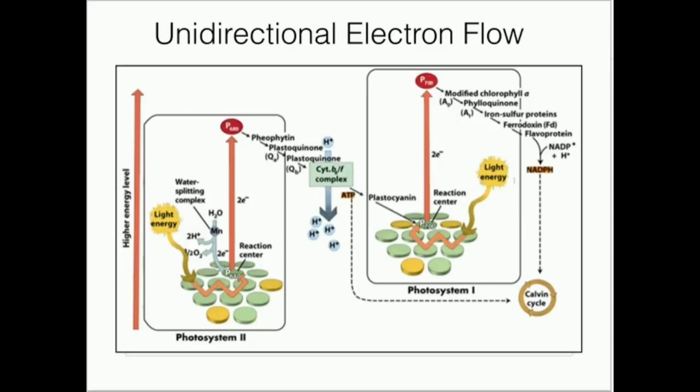It's plastocyanin. Remember, plastocyanin took those electrons from the cytochrome B6F complex. And its function is to fill the electron holes produced by P700 excitation and subsequent electron transfer.